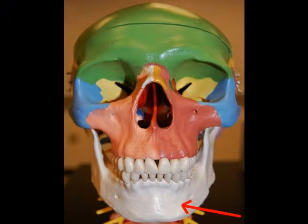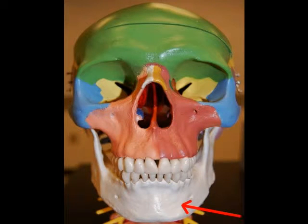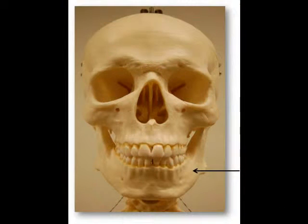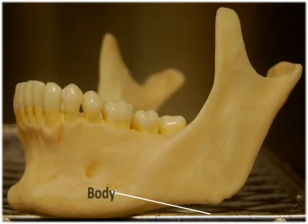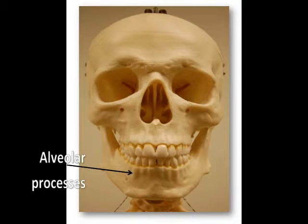The lower jaw bone is the mandible, which is the largest as well as the strongest of the facial bones. Besides the auditory ossicles, which are the tiny bones within the ear, the mandible is the only skull bone that is movable. The body is the curved portion of the mandible that contains the mandibular teeth, which are found within the alveoli, the sockets created by the alveolar processes.